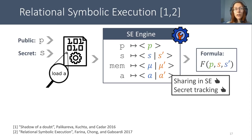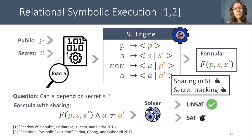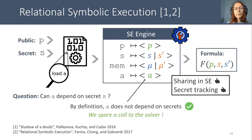Note that these relational expressions also allow us to track secret dependencies. In the end, relational symbolic execution gives us a formula where only the expressions that depend on secret are duplicated, and the rest is shared between both executions. The sharing is similar to shadow symbolic execution for testing software patches, with the difference that here it is used for relational verification. The question we want to answer is: can the variable A depend on the secret S? To do this, we send the relational formula to the solver and ask, can A be different from A prime? If the formula is satisfiable, then A actually depends on the secret S, and we have a vulnerability. Notice that A can also map to a simple expression, and in that case, by definition, it does not depend on the secret, and we can spare a call to the solver, which really improves performance.